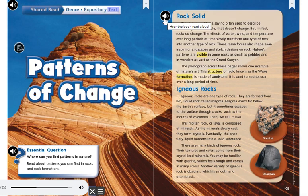Genre: Expository text. Patterns of change. Rock solid. Solid as a rock is a saying often used to describe something that's reliable, that doesn't change. But in fact, rocks do change.